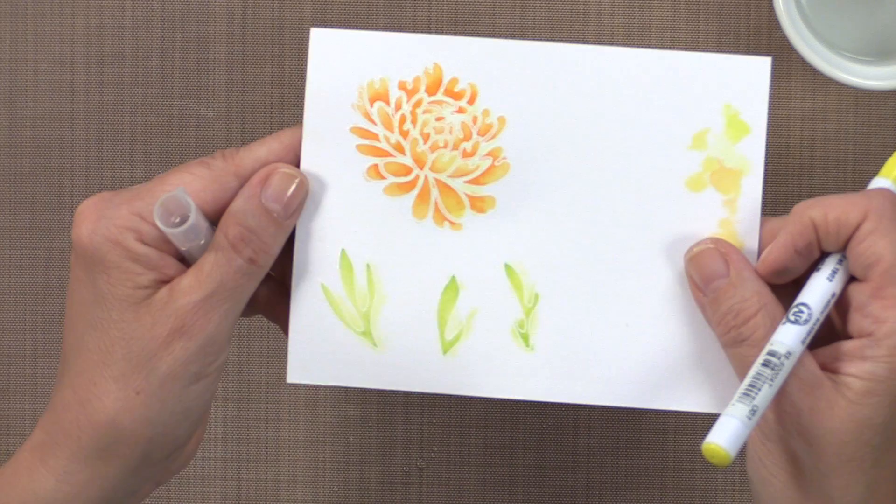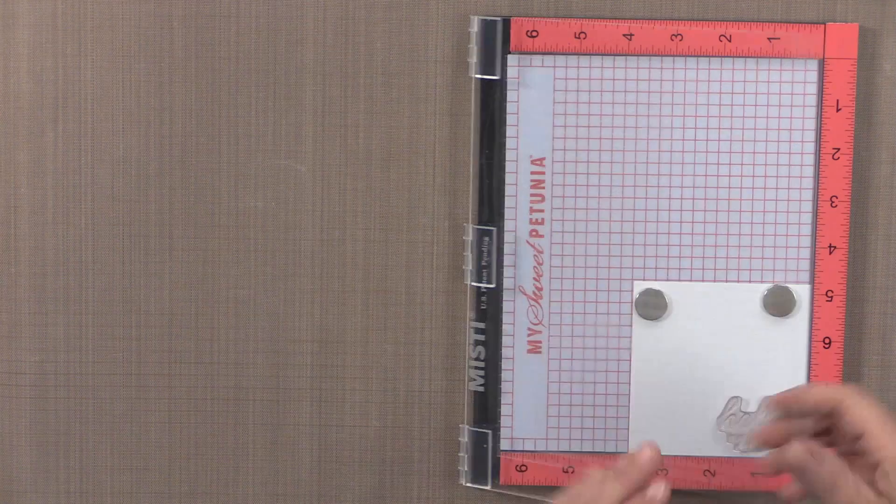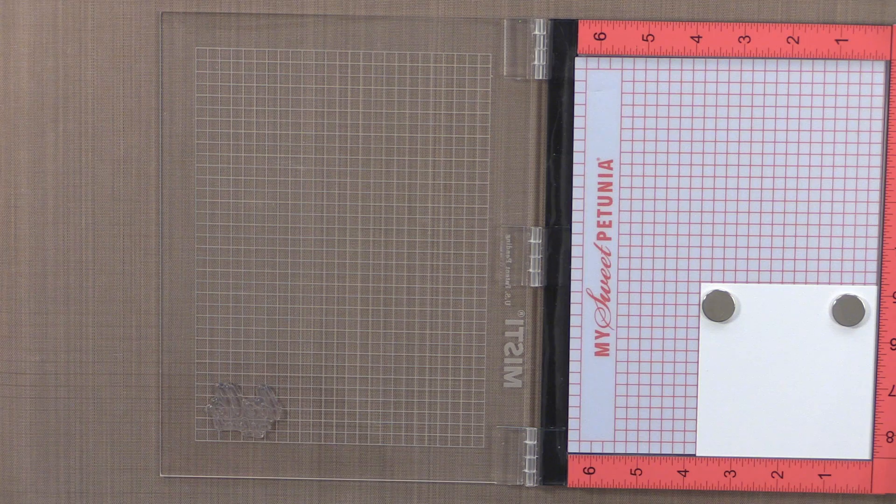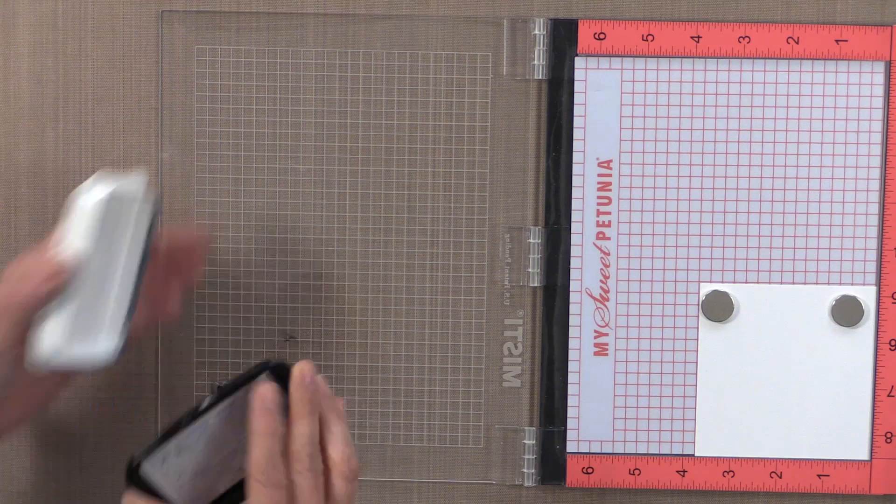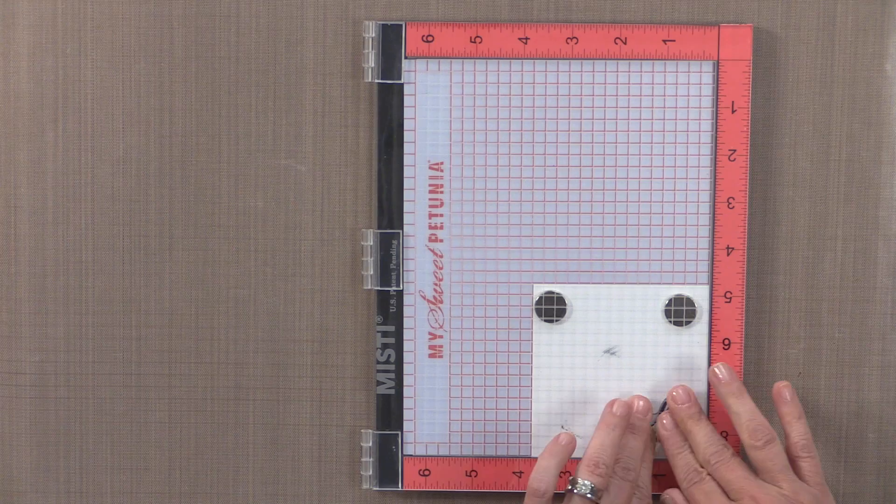So now it's time to add a greeting and I've set my greeting up on the Misti using a little square piece of cardstock. This is going to be a little square card. And then I'm going to ink that up with some Memento Tuxedo Black ink. And I'm going to stamp that greeting right in that bottom right hand corner of my card panel.